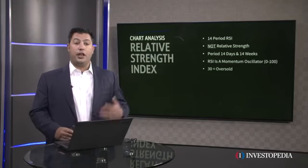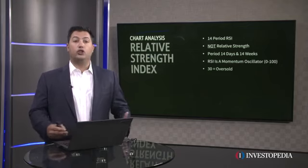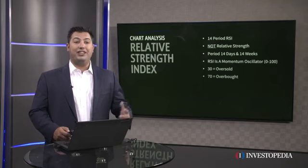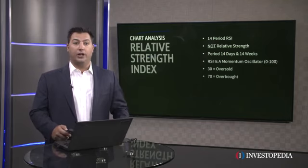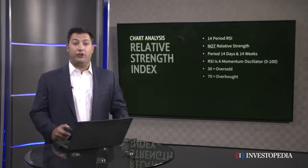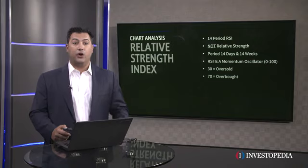Traditionally, 30 is giving you an oversold reading and 70 is giving you an overbought reading. So now we're going to talk about how we use that 30 and 70 to our advantage.